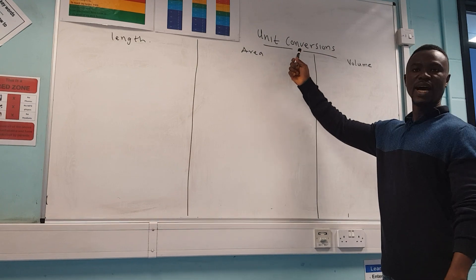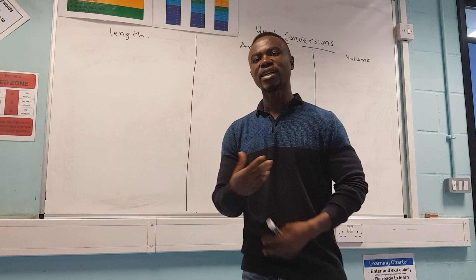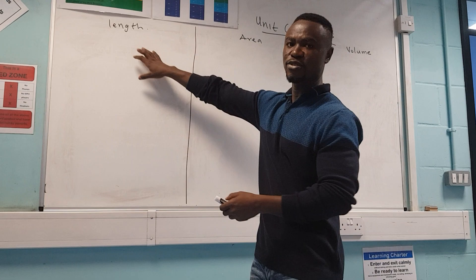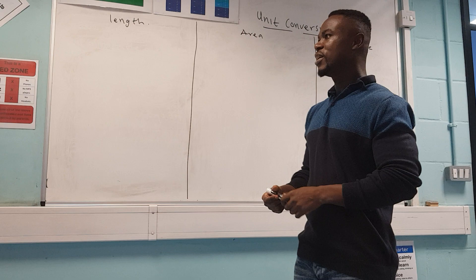We're looking at unit conversions — metric units, capacity, and all that. I'll stick with the easy ones. That's why I split the board into three columns: volume, area, and length. Don't worry about that — you'll understand why.